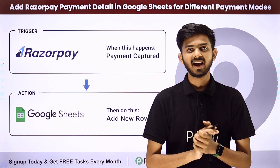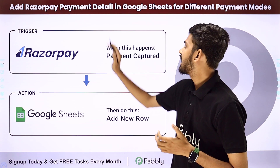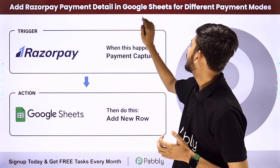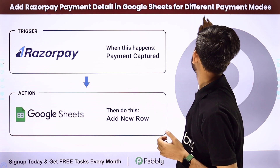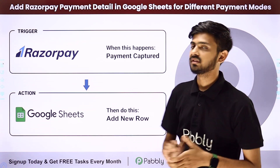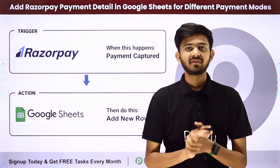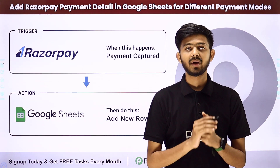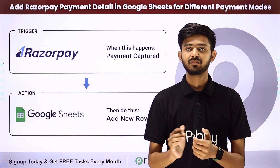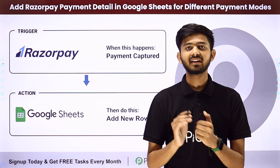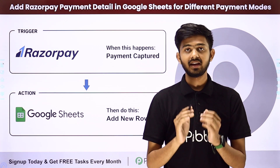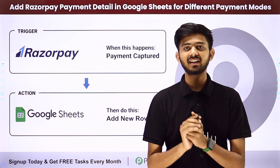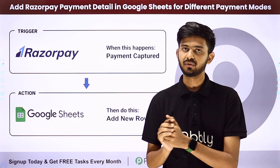Hello everyone. Today our topic is how to add Razorpay payment details in Google Sheets for different payment modes. Whenever we get a new payment in Razorpay through any different payment mode, we want these details to be added in our Google Sheet in a particular sheet for that specific payment mode.